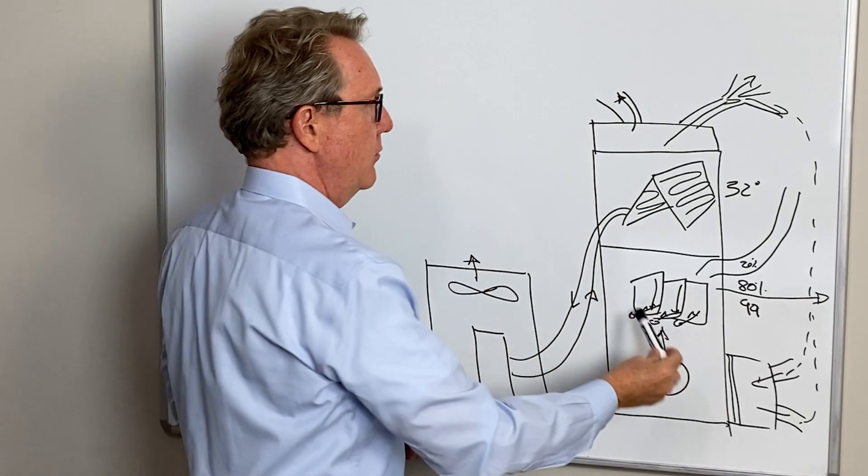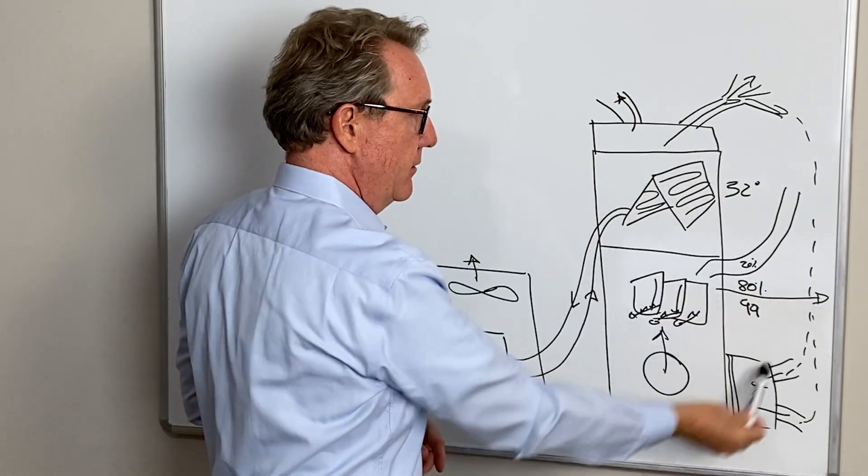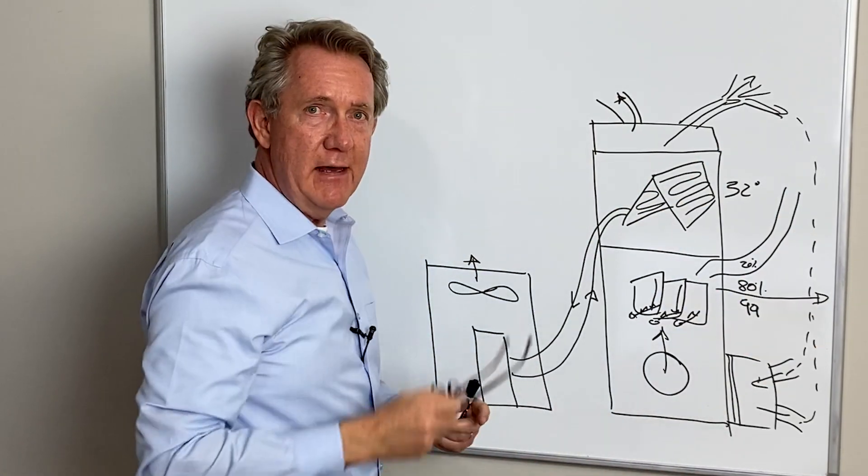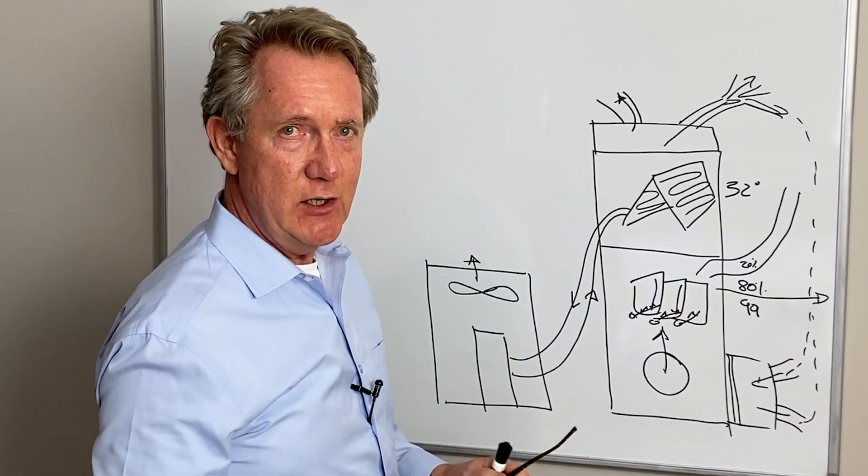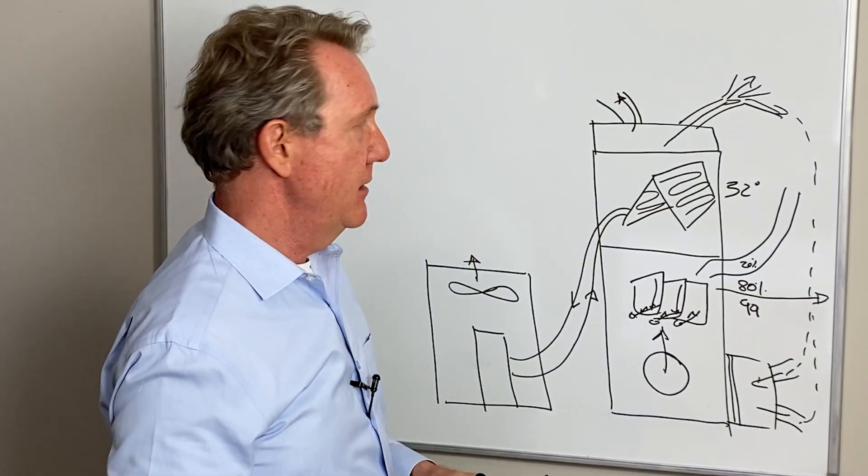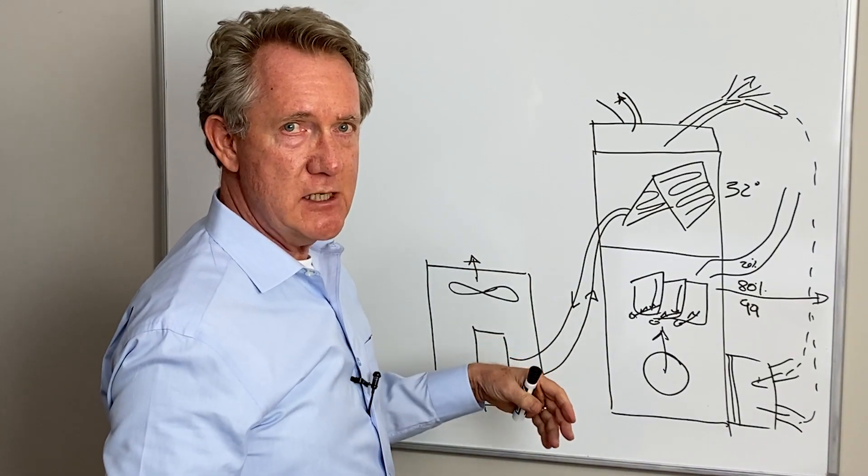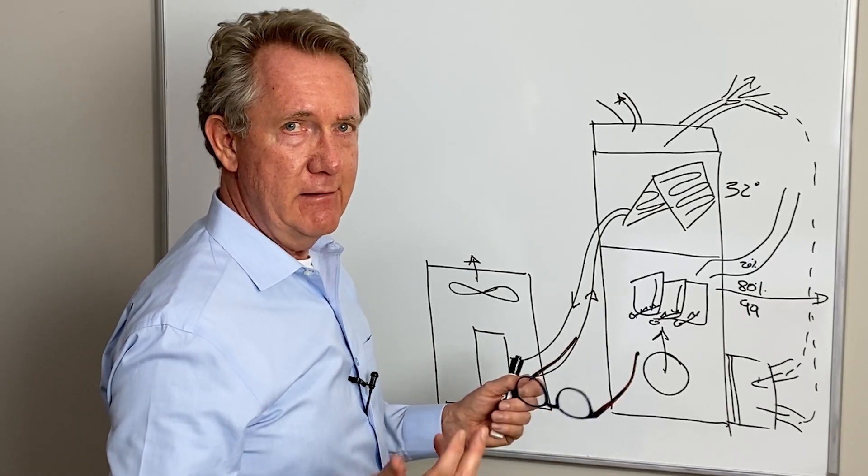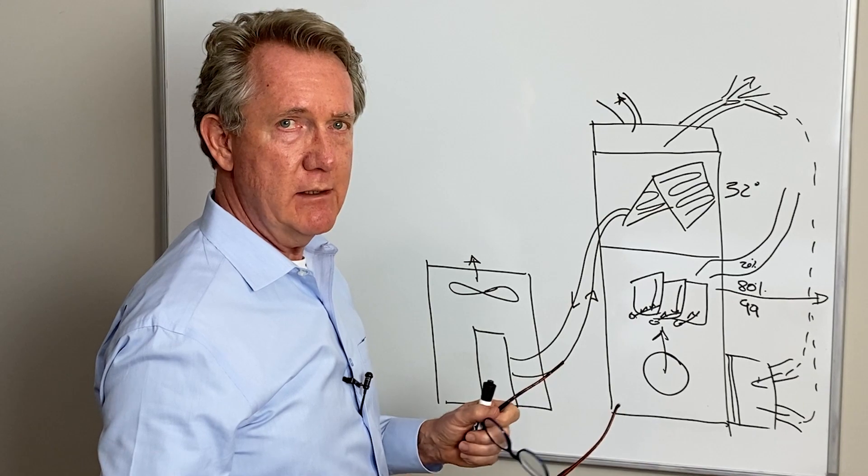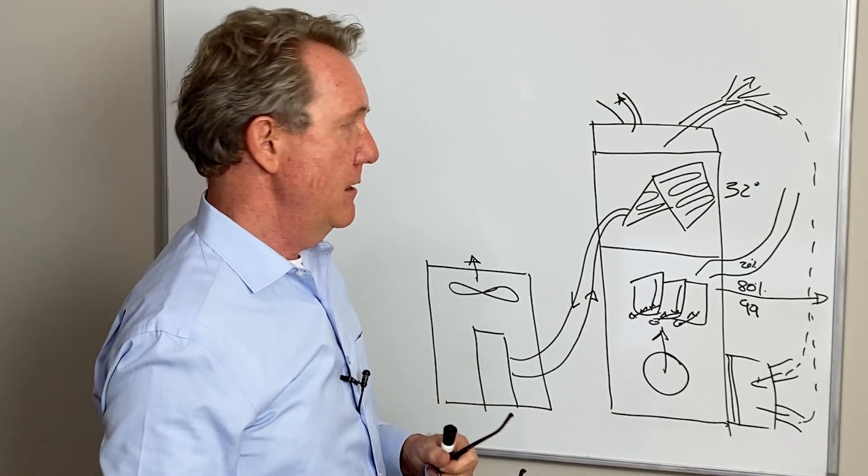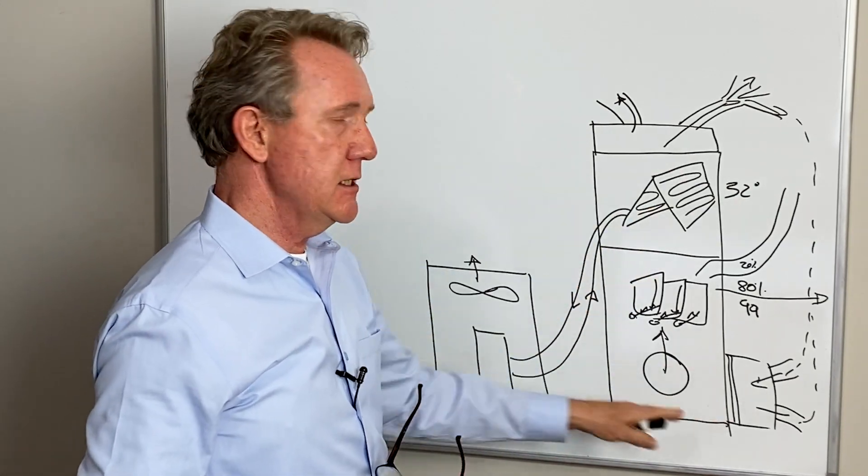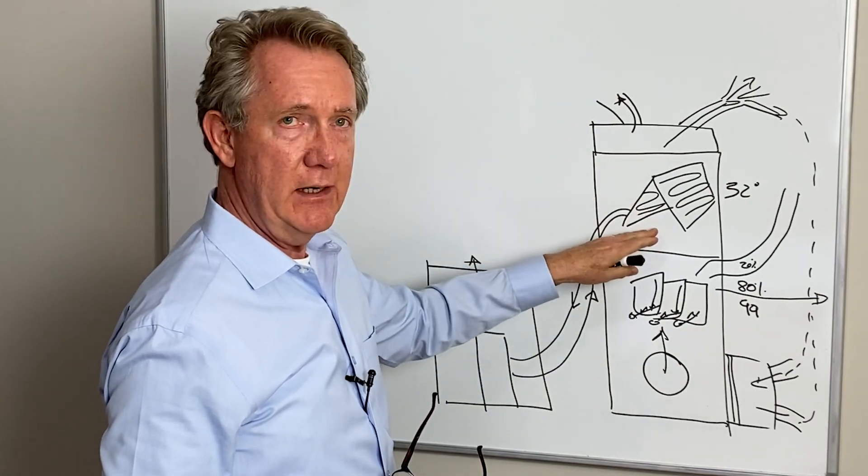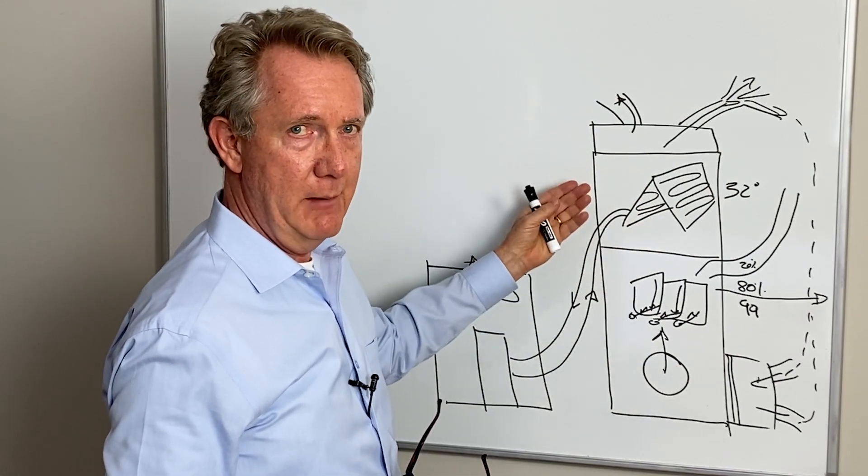So as you can see, we are always moving air through the system. And that's why it's called air conditioning. We're conditioning the air. We're not bringing air in from the outside. Houses have some natural leakage and there may be some situations where the system is configured to do that. But for the most part, we are just recirculating the same air and either bringing the temperature down or taking it up.